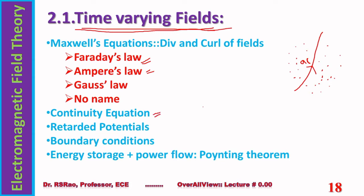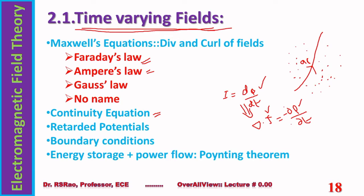Then the continuity equation. Current is charge in motion. In circuit theory, that relation is indicated through i = dq/dt. This is a single-dimensional equation; it can be generalized to three dimensions. Once generalized, it appears as ∇·J = −∂ρ/∂t, where J is current density and ρ is charge density. This is the continuity equation. The underlying principle is charge conservation — charge can neither be created nor destroyed. The continuity equation also has an integral form.